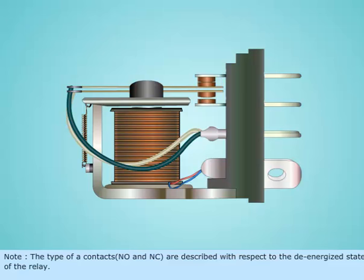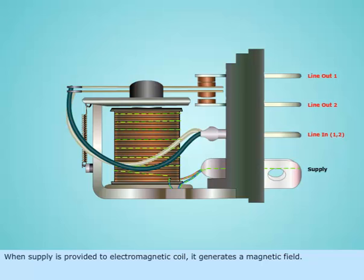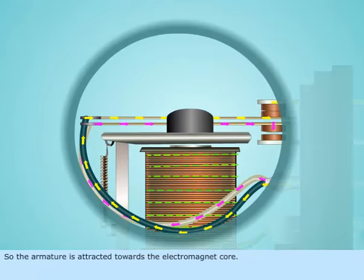When supply is provided to electromagnetic coil, it generates a magnetic field. So the armature is attracted towards the electromagnetic core.